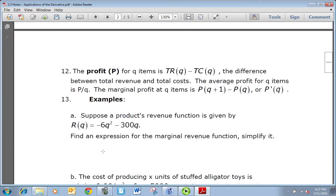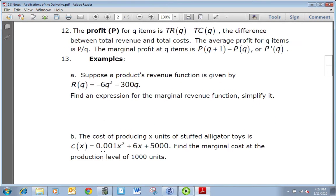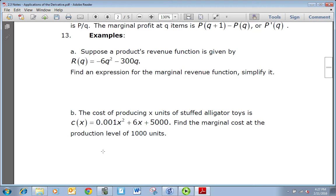This one says suppose a product's revenue function is given by R(q) = -6q² - 300q. We want to find an expression for the marginal revenue function and simplify it. So here all we're asked to do is find R'(q), which is -12q - 300, and from that function we could find the marginal revenue at any q.